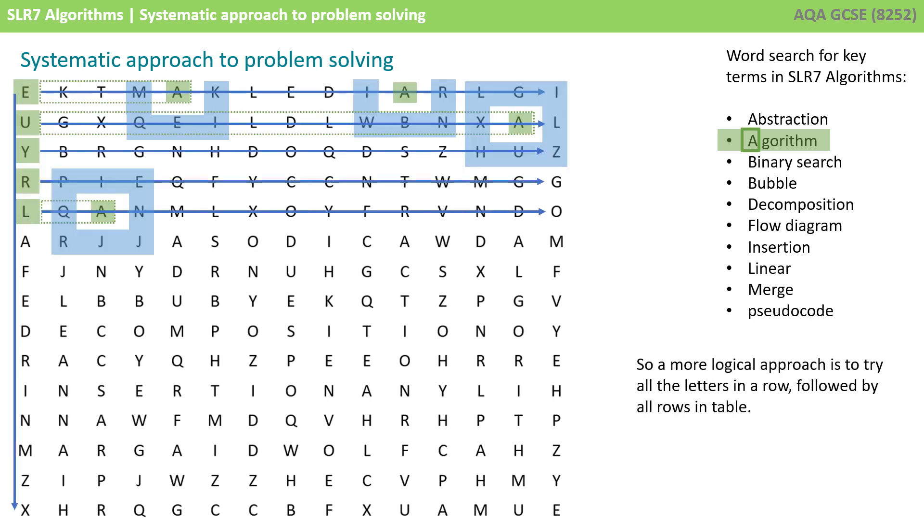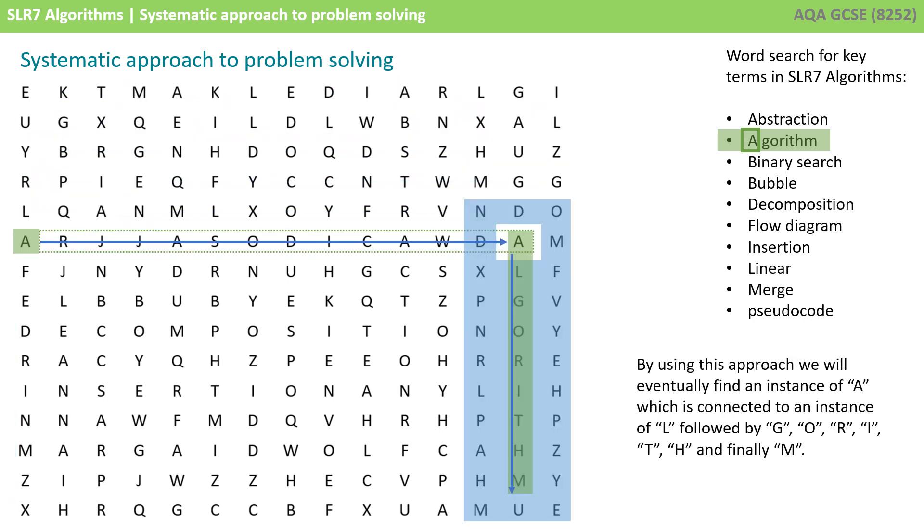So, we want to try all the letters in a row, and then we want to try all the rows, so we've done all the columns. Eventually, we're going to find an instance of A that, when checked, is connected to an instance of L, and then we can follow the path until we find the word algorithm. It feels like there's a very systematic and logical approach that we can take here, and therefore, using algorithmic thinking, we should be able to create an algorithm to solve this problem.